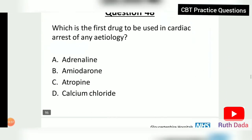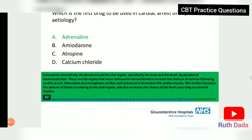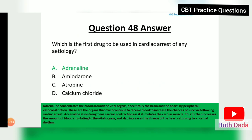Question 48: Which of the first drugs is to be used in cardiac arrest of any etiology? The answer is adrenaline. Adrenaline concentrates blood around the vital organs — specifically the brain and the heart — by peripheral vasoconstriction. It also strengthens cardiac contraction by stimulating the cardiac muscle, further increasing blood circulation to vital organs and increasing the chance of the heart returning to a normal rhythm.